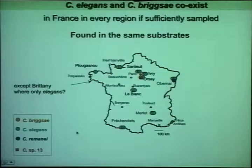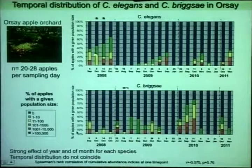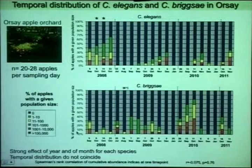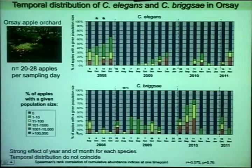More precisely, in the apple orchard in Orsay, I sampled over four years at many different time points, looking at 25 apples per time point and the proportion with worms — either C. elegans or C. briggsae. C. elegans tends to increase during the fall, peaking late in November or even December, with no C. elegans in summer. Whereas briggsae is present in summer and drops earlier than C. elegans, by November. So there is a seasonal pattern with elegans arriving later in the year than briggsae.